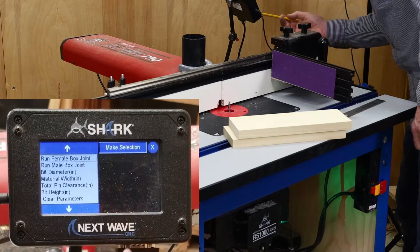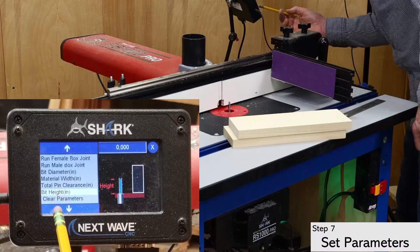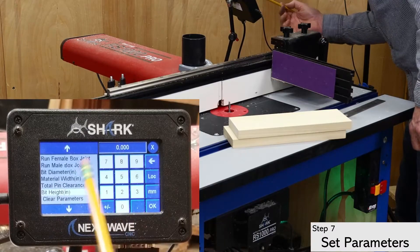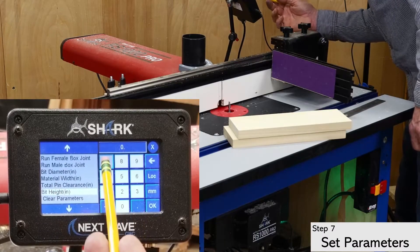Pressing run will open a list of parameters that must be set up. Starting at the bottom of the list, the first is the bit height.